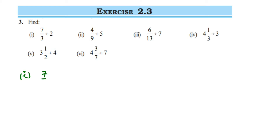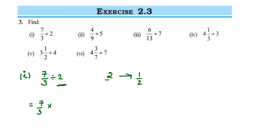We have 7/3 divided by 2. When dividing two fractions, the first number 7/3 remains the same, division becomes multiplication, and you take the reciprocal of the second number. The reciprocal of 2 — since 2 can be written as 2/1 — becomes 1/2. So we multiply 7/3 by 1/2. Try to cancel numbers if possible; here we cannot.